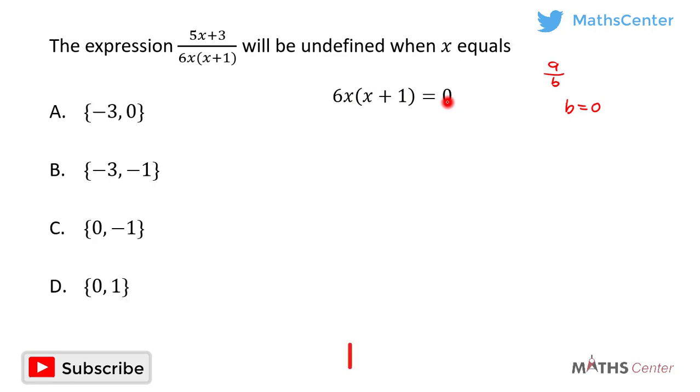If 6x times x plus 1 is equal to zero, then we can say that either 6x is equal to zero or x plus 1 is equal to zero.